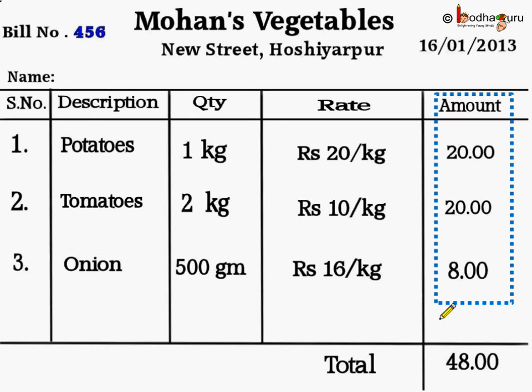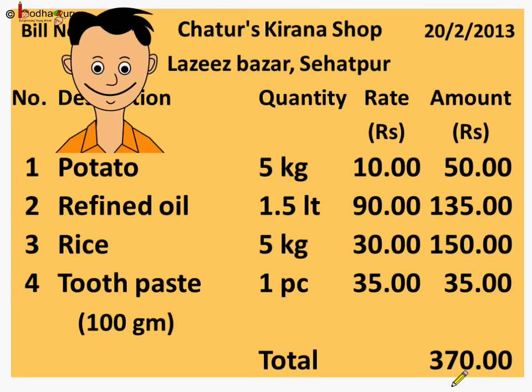Here too, if we add 20, 20 and 8, we get 48. So our calculation was right and we got the correct total amount. Now let us try to create another bill.